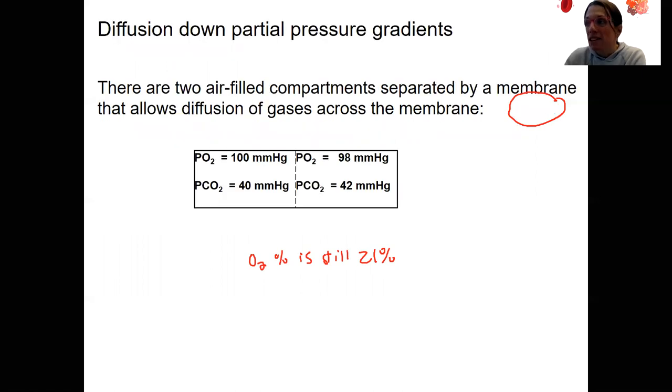So do that one. Last thing for this video, why this matters is diffusion is going to occur down these gradients. Partial pressure gradients are kind of like instead of concentration. Diffusion occurs down electrochemical gradients, often concentration, for molecules like glucose, sodium. So for gases, we're going to use partial pressure instead. That will become obvious why we do that later on. For now, just know we do.